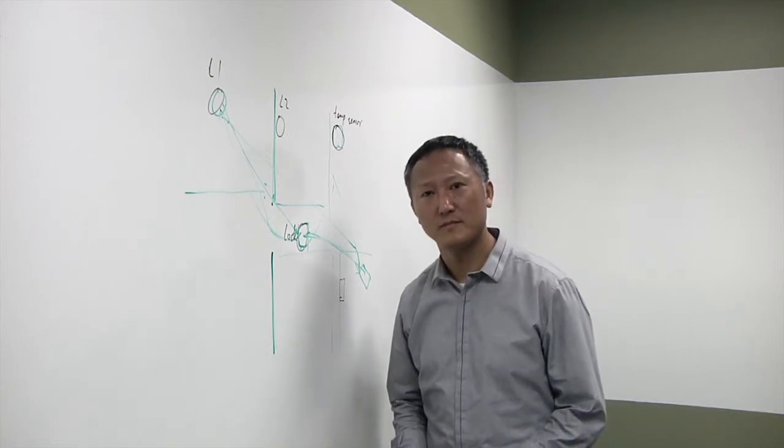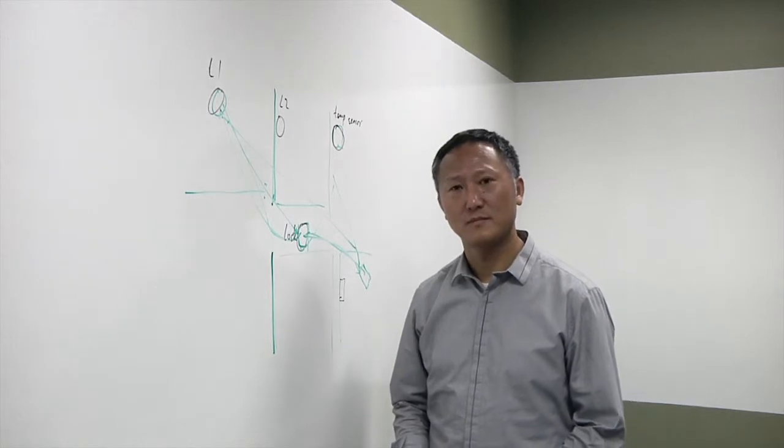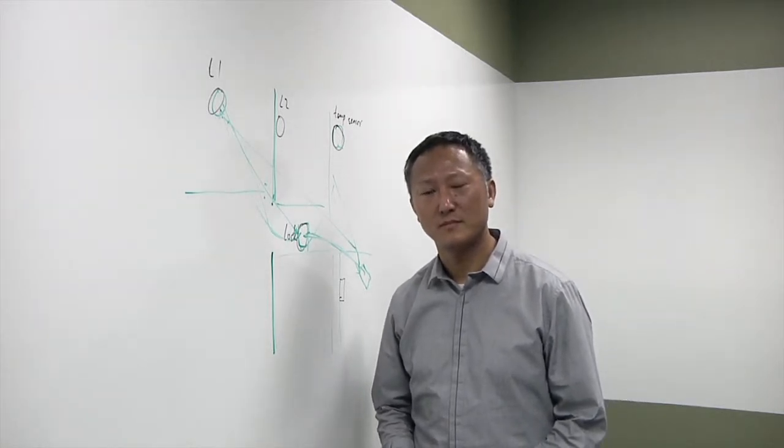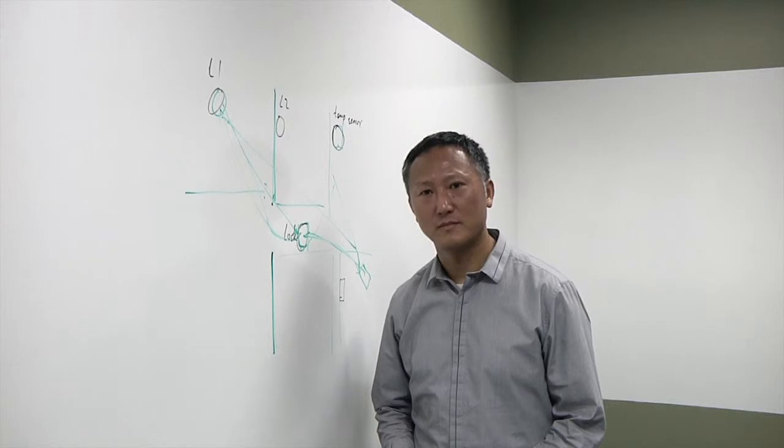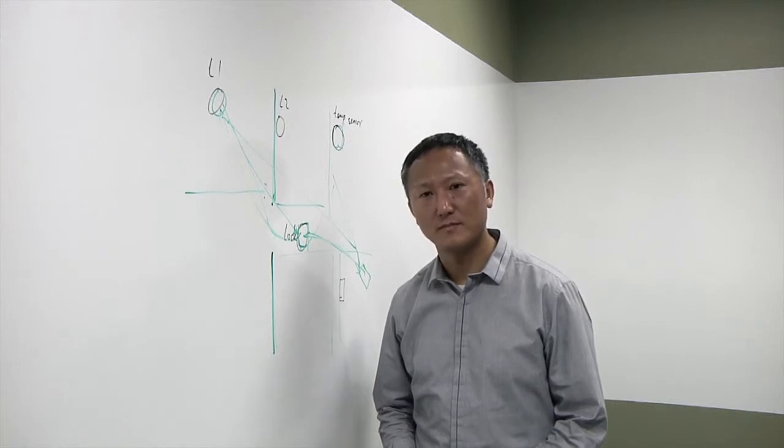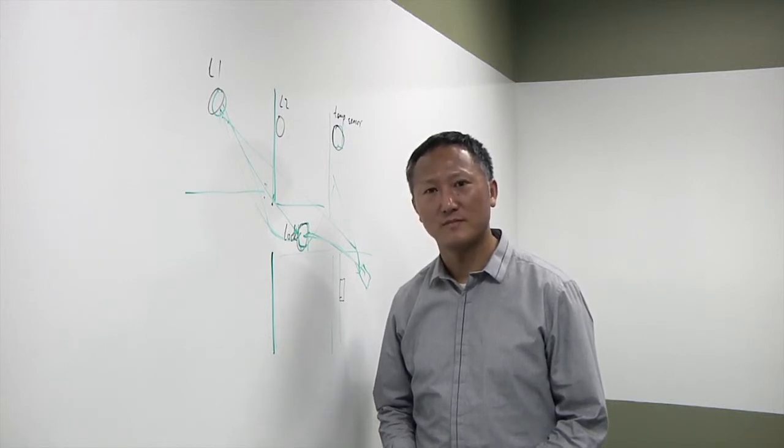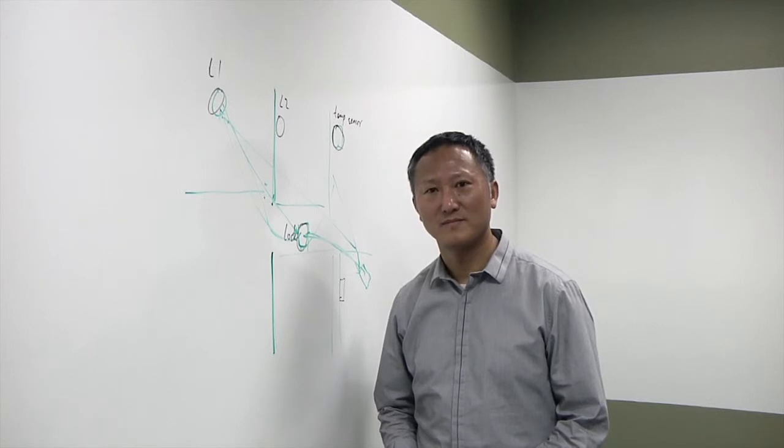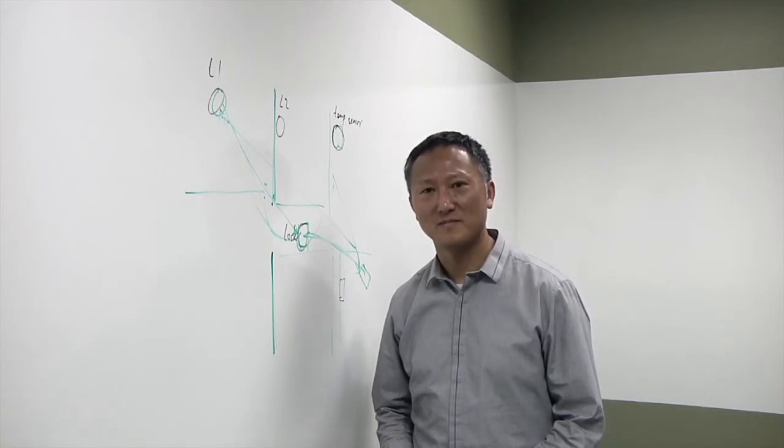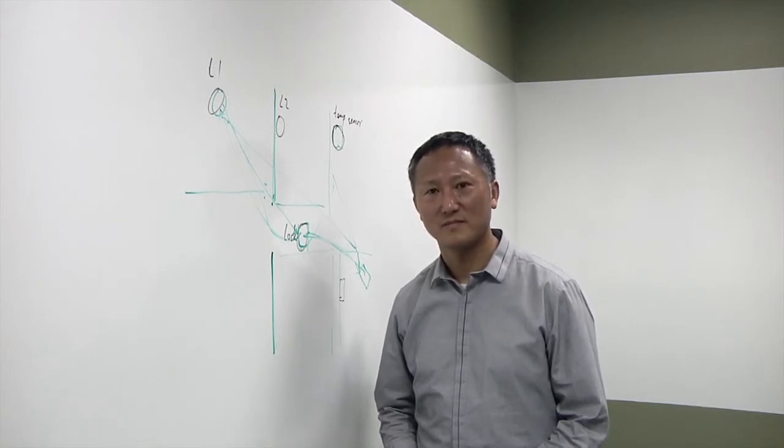But will everything actually work together? One of the problems that I think a lot of people are frustrated with in the home is that when you go to your TV, you've got a stereo connected to it, and suddenly you have four, five, six remote controls, and none of them do everything. Are we getting to the point where we're going to have some standards here, and will this help?